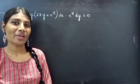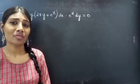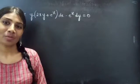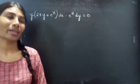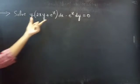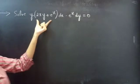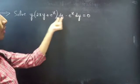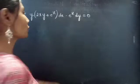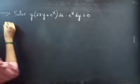Hello everyone, this is Jay Kalkina here. In this video we are going to solve the given differential equation. So let's get going. Problem: solve y times (2xy + e^x) dx minus e^x dy equals 0.